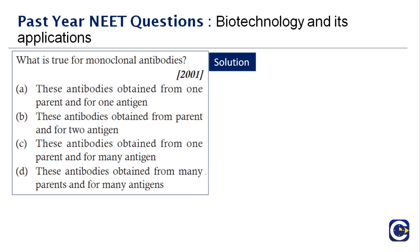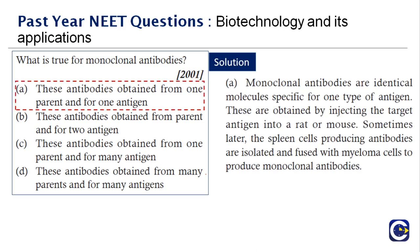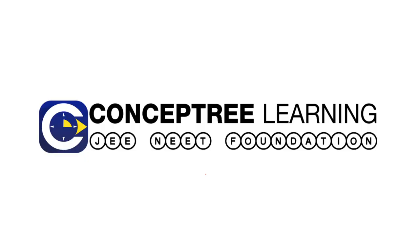Next question: what is true about monoclonal antibodies? Mono means single — monoclonal antibodies are identical molecules specific for one type of antigen. They are obtained by injecting the target antigen into a rat or mouse; spleen cells producing these antibodies are isolated and fused with myeloma cells. They are antibodies obtained from one parent for one specific antigen. The right answer is option A. This completes Part 2 of Biotechnology and Its Applications.